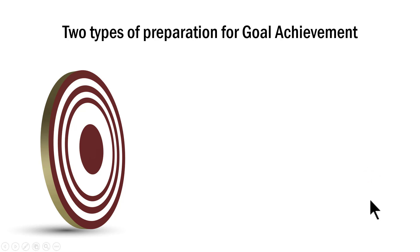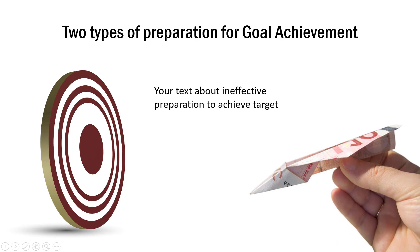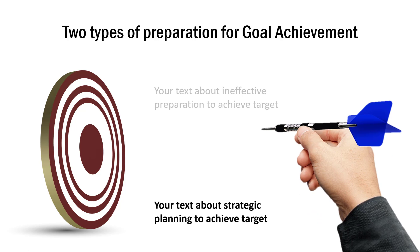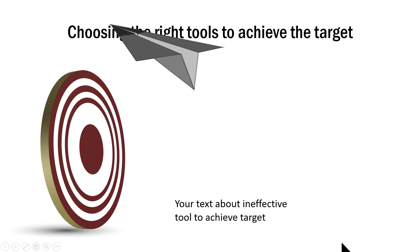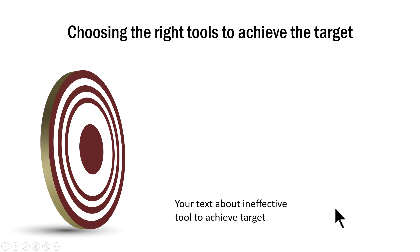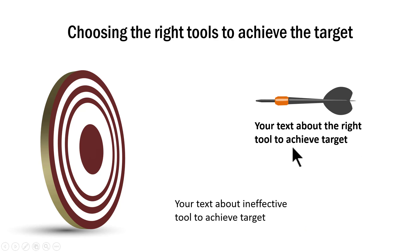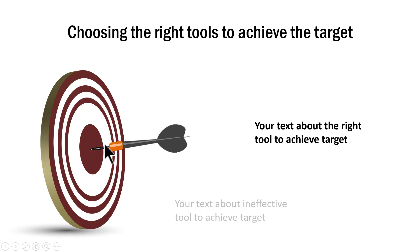Another example talks about two types of preparation for goal achievement. The first type is an ineffective preparation to achieve the target, and then we talk about the right and strategic way to reach your targets. You can also add custom animation: we show the ineffective tool first and what happens — since it is not the right tool, it flies away. Then the right tool is shown, explained in more detail, and we show how it helps you achieve the target.